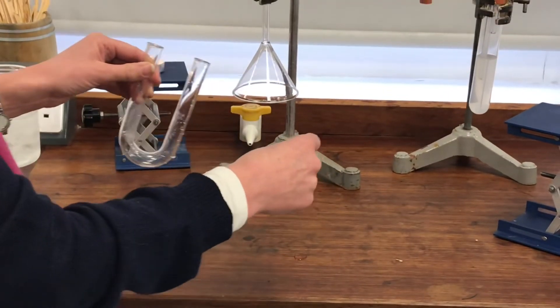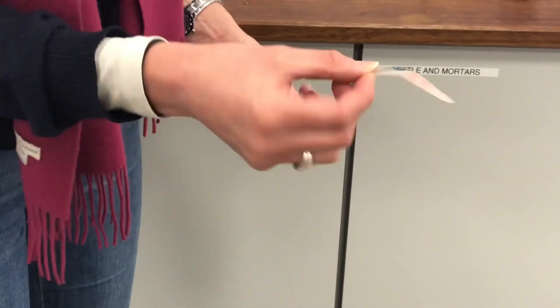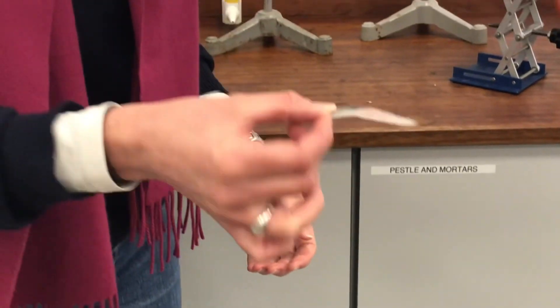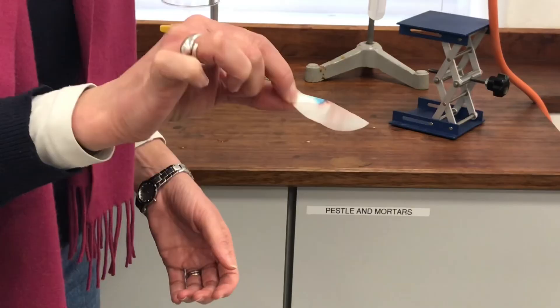There we are. Oh and I think that's pretty good. My paper has got a very distinct pink color to it. Okay, so I think that's pretty good evidence that there was water in that U-tube.